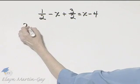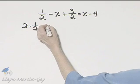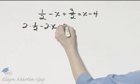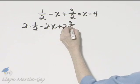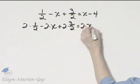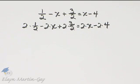I'll write down 2 times this term minus 2 times that plus 2 times 3 halves is equal to 2 times x minus 2 times 4. Every single term is multiplied by 2.